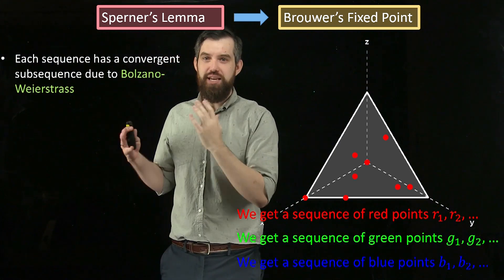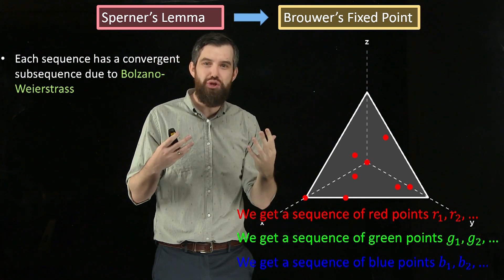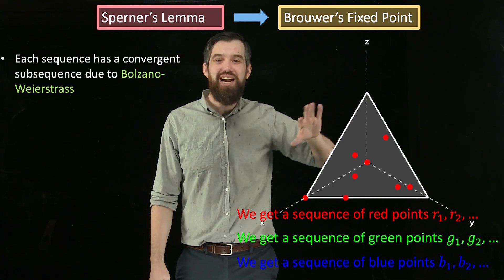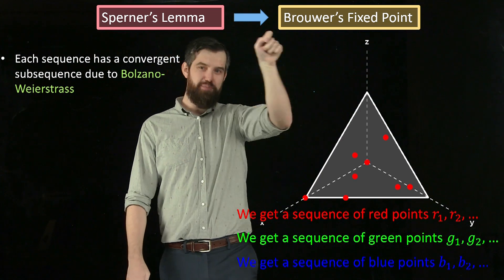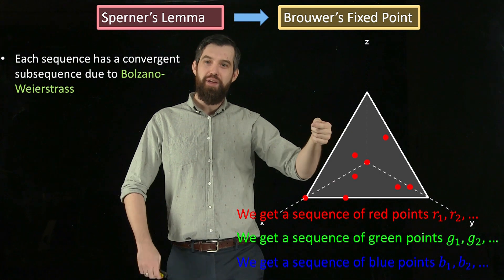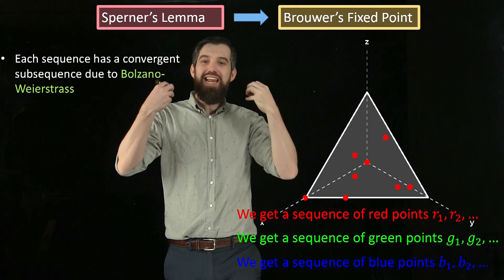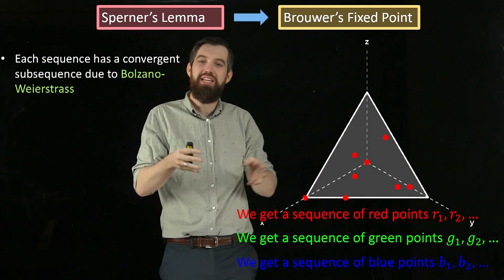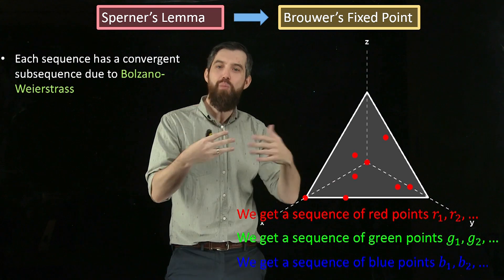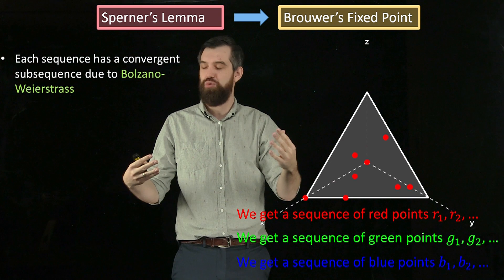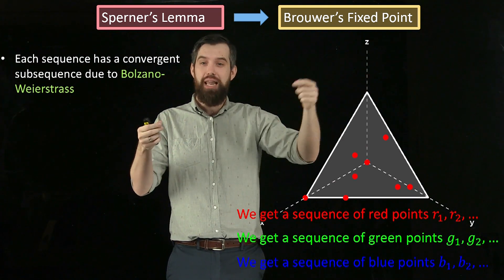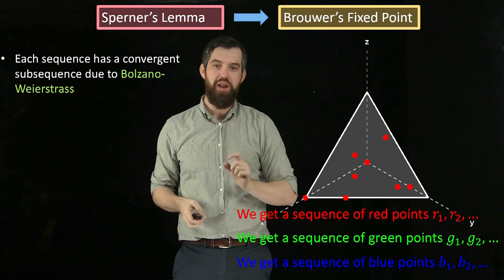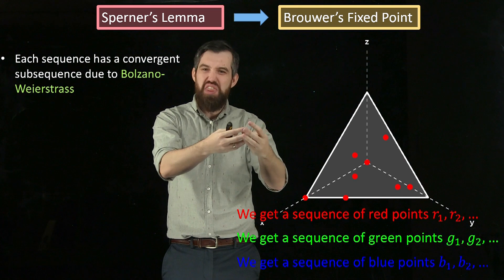I need to say a few points about this. First: every sequence has a convergent subsequence, due to the Bolzano-Weierstrass theorem. My triangle is a finite space with infinitely many points bouncing around — because there are infinitely many points squeezed into a finite space, there must be somewhere on the triangle where they start accumulating. So somewhere in this infinite sequence, there is a convergent subsequence — an infinite collection of points getting arbitrarily close to some spot. So there's some red point, some green point, and some blue point where the respective sequences converge.